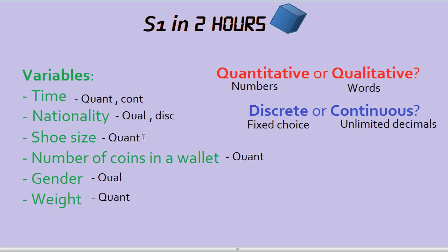Shoe size, a lot of students get this one wrong. Shoe size would be discrete. Your choices are fixed. You can have shoe size 9.5 or 10, but you can't have shoe size 11.642. You can't have unlimited decimals.